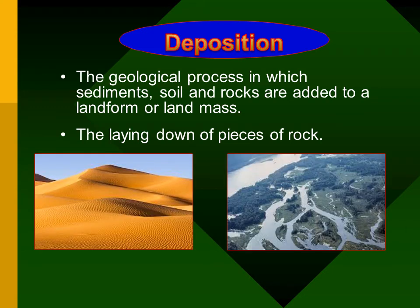As moving water slows, the large pebbles in the water settle to the bottom first, then the small sand-sized pebbles sink, and finally the smallest bits of silt and clay sink. Rivers deposit a large amount of material where they flow into the ocean, and the deposited material forms an area called a delta.